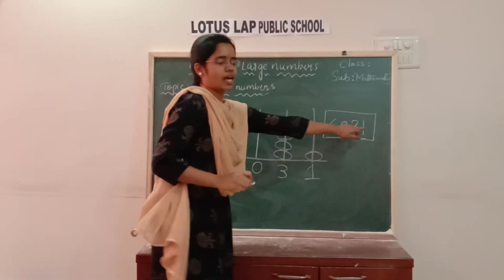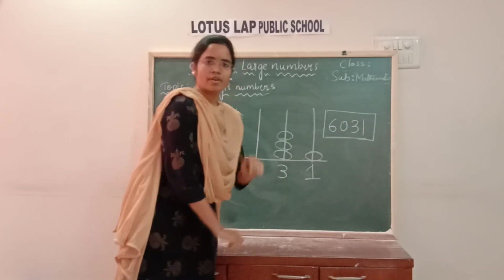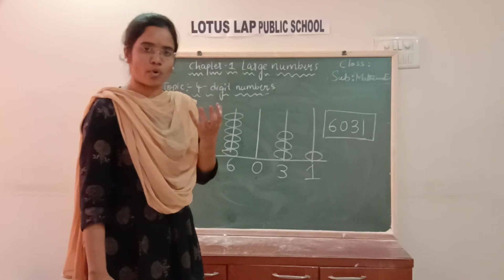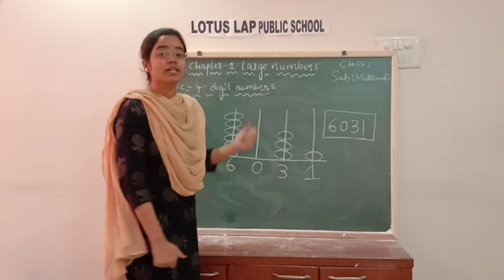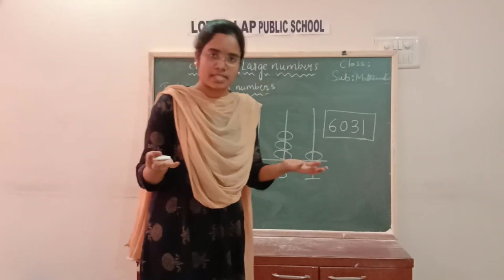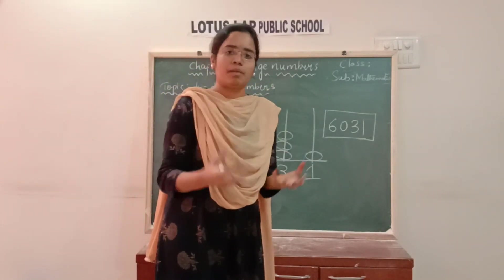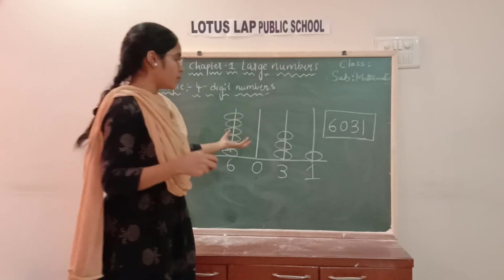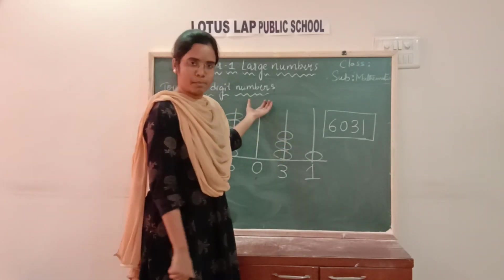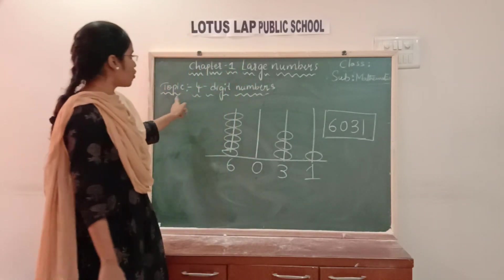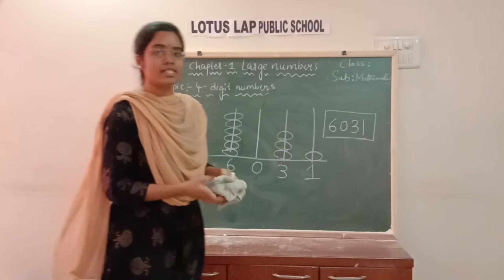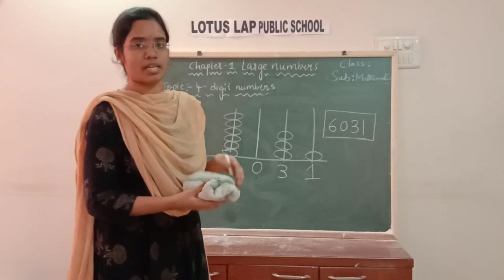So this is how you find out or form a 4-digit number — by seeing pictures, by using four different digits, and on the abacus instrument also you can form 4-digit numbers. This is forming a 4-digit number. Now our next topic is reading a 4-digit number — how to read a 4-digit number.